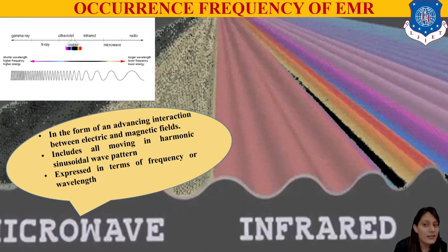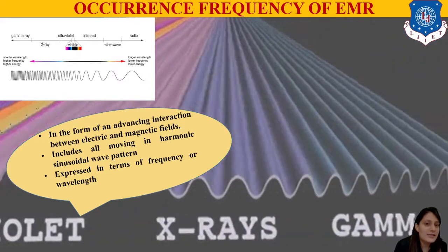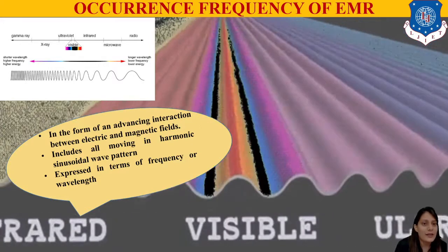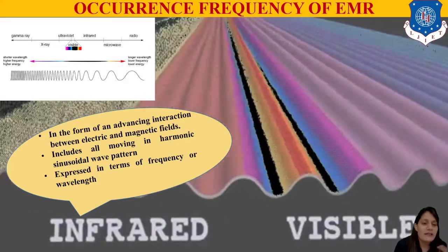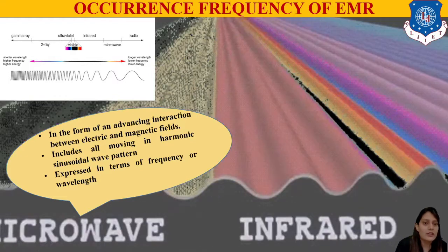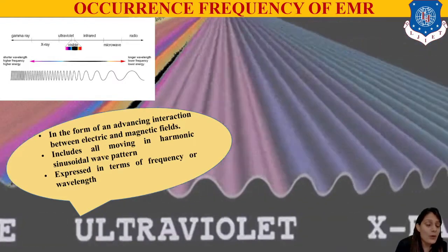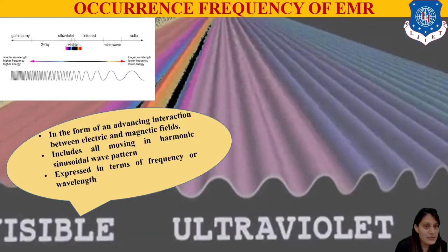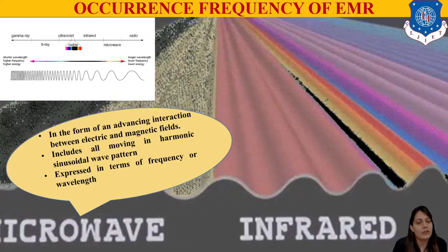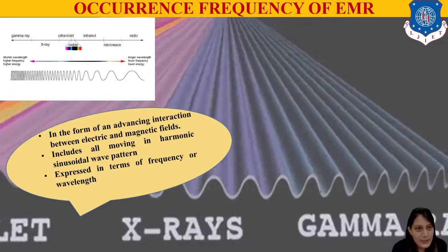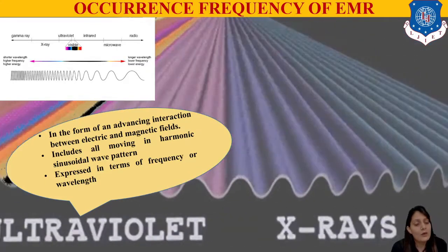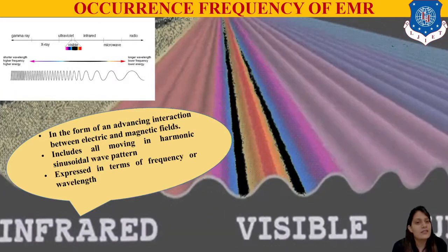Between ultraviolet and infrared we have the visible range — red, green, and blue — which is very important in the electromagnetic spectrum for taking images. Then we have microwaves, which have longer wavelengths. Microwaves penetrate through objects and give us information about the quality of that object. They are a whole separate section called microwave remote sensing, and satellites are made accordingly.